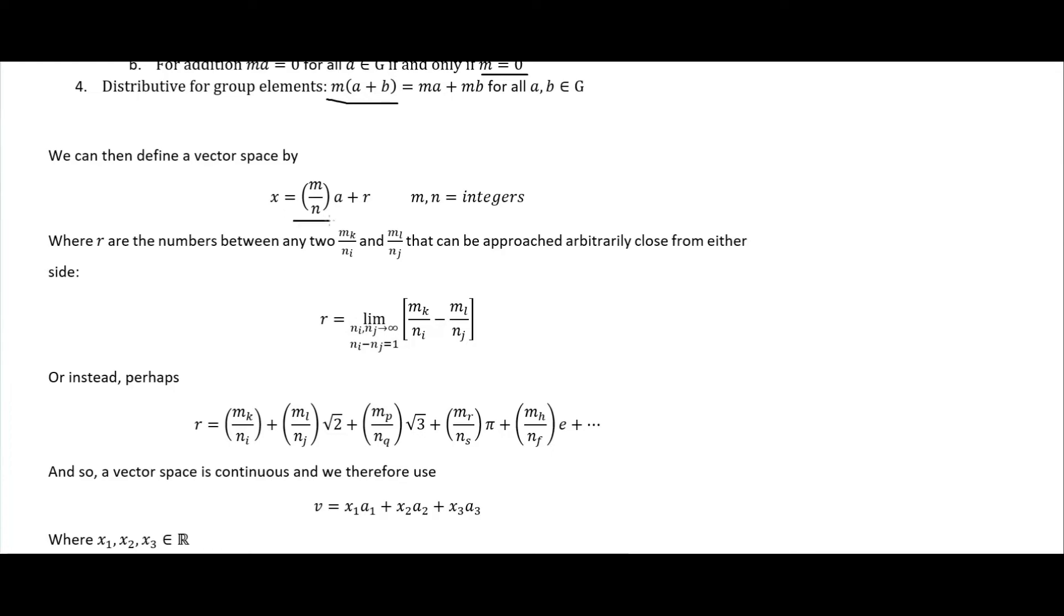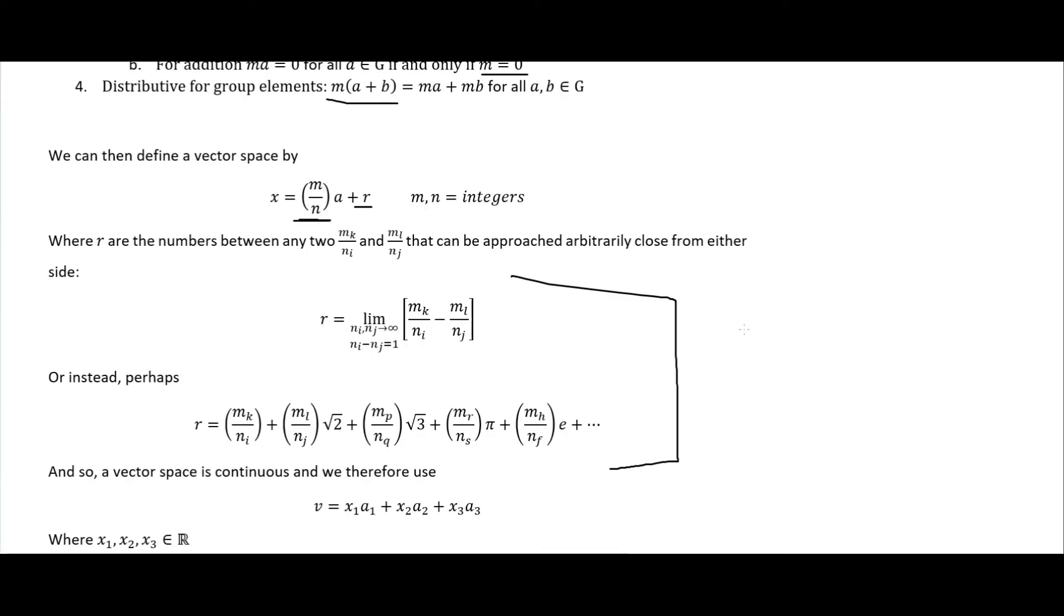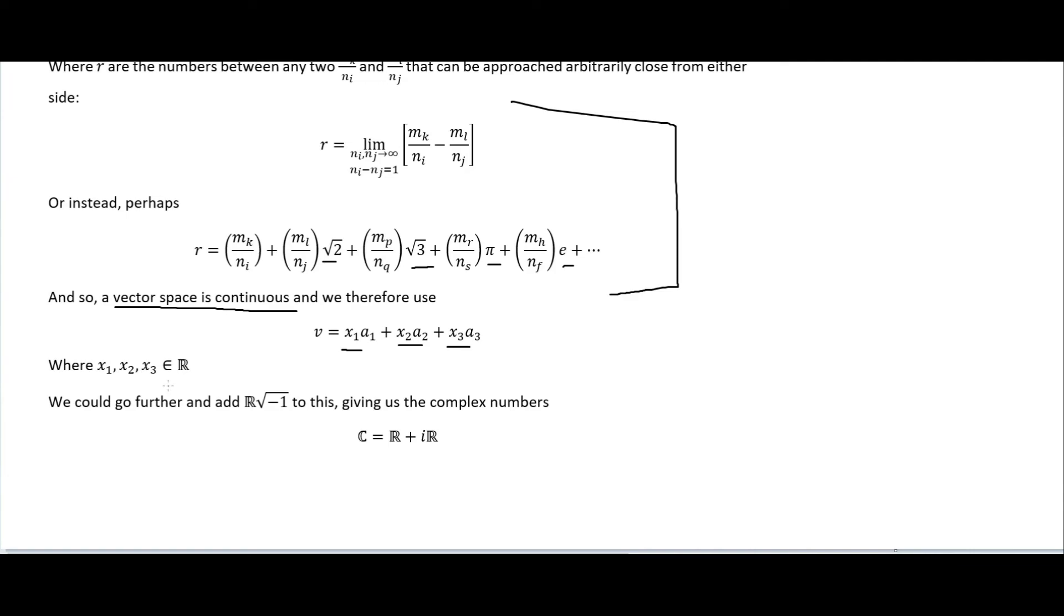Like this: m over n where m and n are integers, so just any arbitrary integer. We can also then add this r here which essentially gives us the irrational numbers. We can have all our rational numbers, which is any integer divided by another integer. The irrational numbers like the square root of 2 and the square root of 3 and pi and Euler's number and things like that. When we add all those in we get our real number line and it becomes continuous, and we can therefore exchange out those m, n's, and k's for these x's here which can take on any real number value, and that'll give us a vector space.